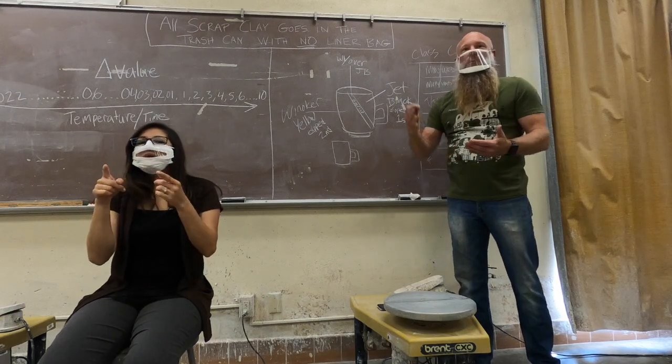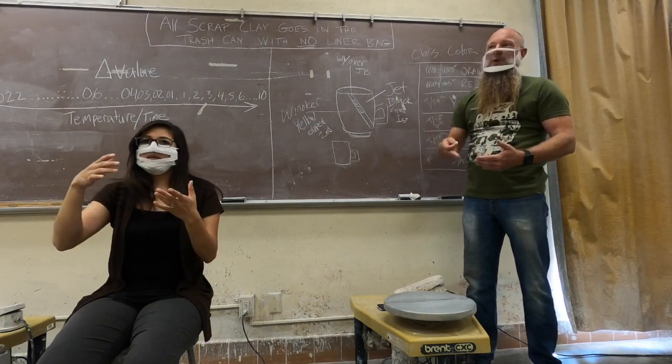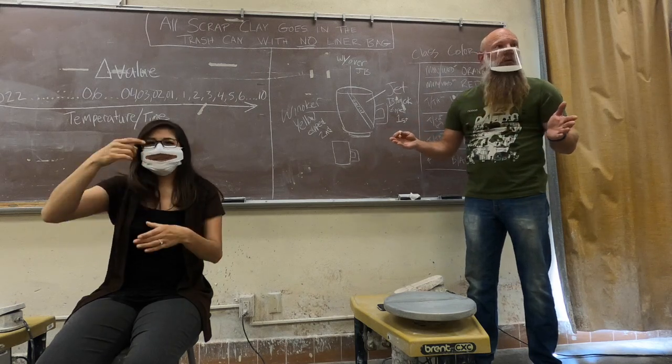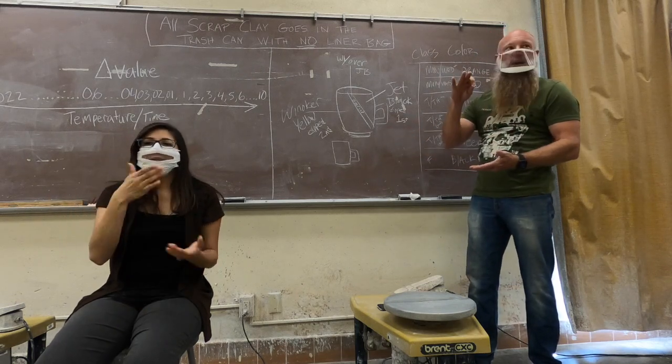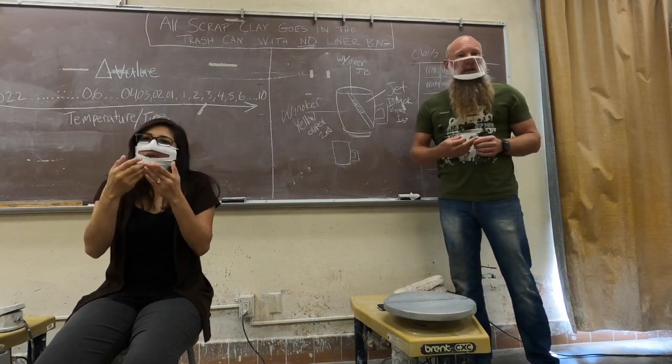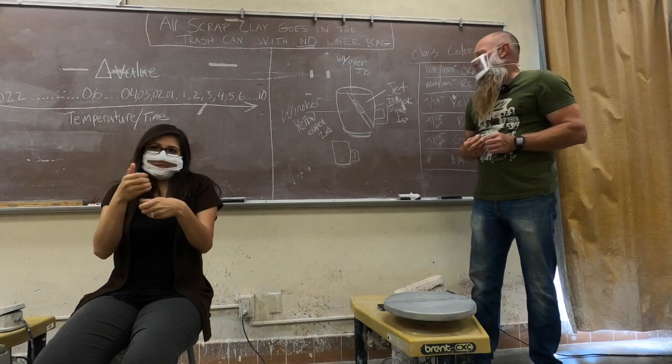Some people, especially when we get into throwing, some people number their cylinders that they throw on the wheel because a lot of the cylinders tend to look the same, okay? Some just might be wider. Some are taller and narrower. Some are tall but still wide. It all just depends on what you make as the student, right? And that's okay.